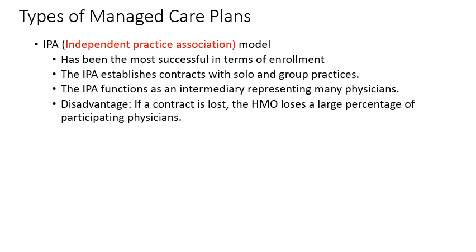The IPA model has been the most successful in terms of enrollment. The IPA establishes contracts with solo and group practices — doctors who work by themselves as well as those in group settings. The IPA functions as an intermediary representing many physicians. The disadvantage is that if a contract is lost, the HMO loses a large percentage of participating physicians.